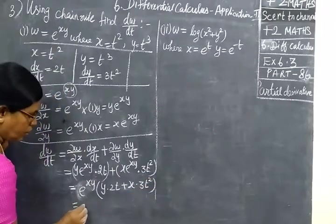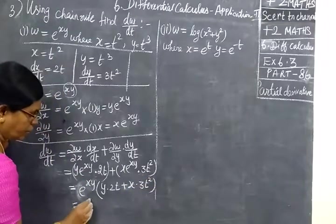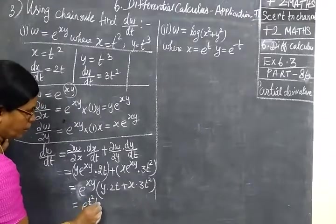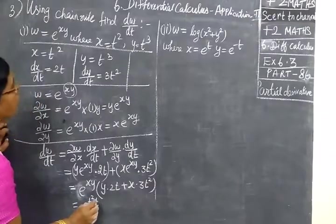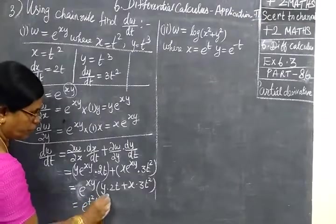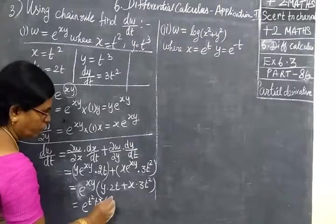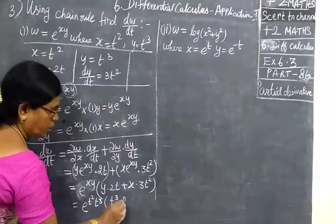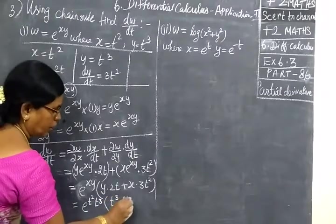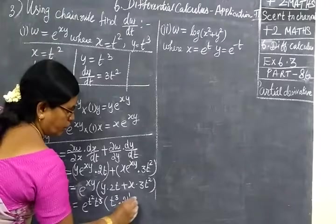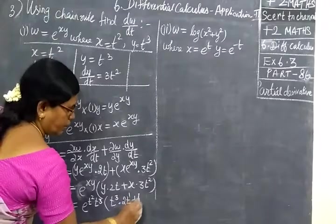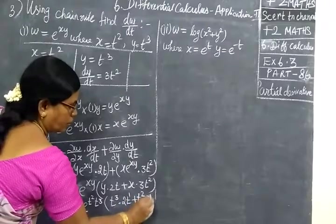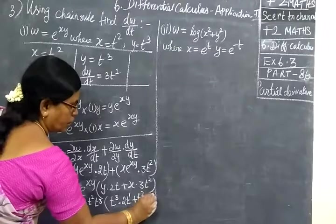Now you substitute. So, e power xy is written as e power t to the power 5. y is t cube, bracket t cube into 2t, plus x is t square into 3t square.